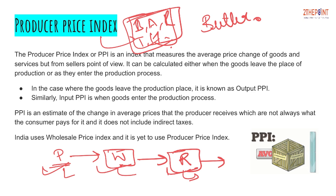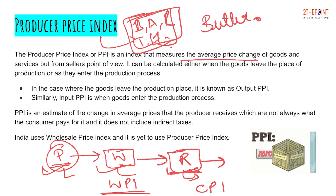At the wholesaler level there is a price index called WPI — the Wholesale Price Index. At the retail level it is the Consumer Price Index, CPI. And what about the producer level? To calculate the changes in the price of goods and services at the producer or production level, it is the Producer Price Index.